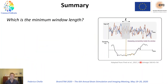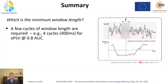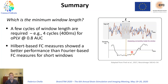To summarize the results, in order to answer the question of which is the minimum window length, we found that at least a few cycles of the oscillation at the frequency of interest are required to obtain reliable estimates. For instance, for the PLV, to obtain a 0.8 area under the curve we need at least 4 cycles, which at 10 Hz means 400 ms. This value determines the intrinsic temporal resolution of time-varying connectivity estimates. We also found that Hilbert-based metrics showed better performance than Fourier-based metrics for short windows; the former achieved similar area under the curve performance with window lengths one-third to one-half of those required by Fourier-based methods.